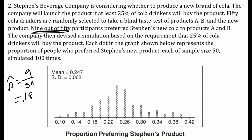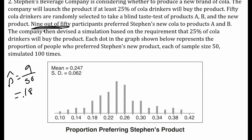The company devised a simulation based on the requirement that 50% of cola drinkers will buy the product. Each dot in the graph represents the proportion of people who preferred Steven's new product, each with a sample size of 50, simulated 100 times.